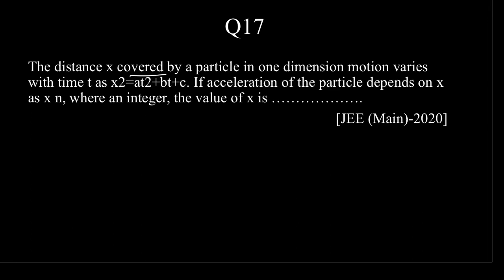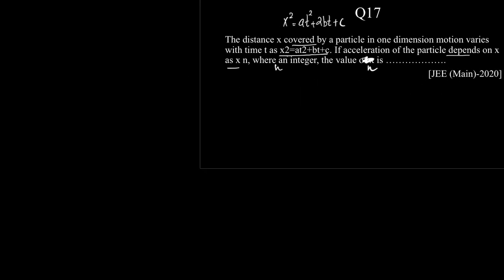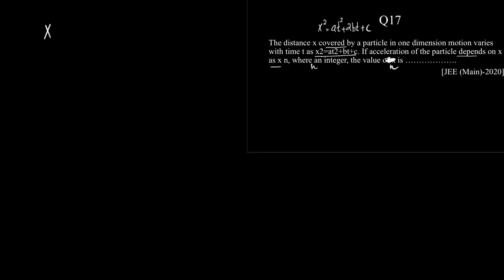The distance covered by a particle is given as x² = at² + 2bt + c. If the acceleration of the particle depends on x as x to the power n, where n is an integer, the value of n is to be found. Now let us start writing the solution.